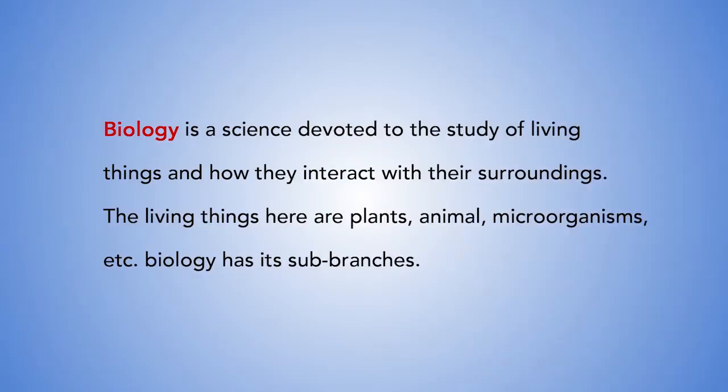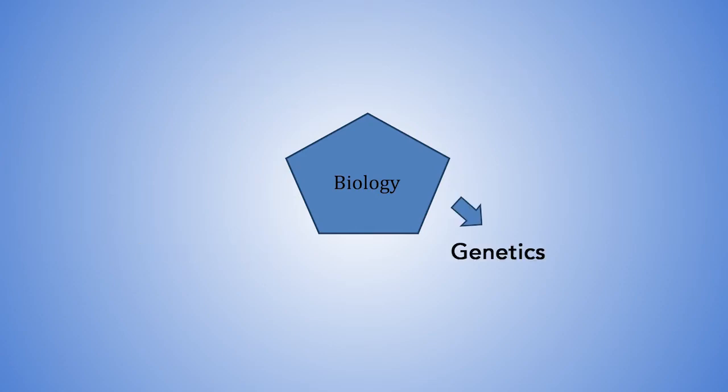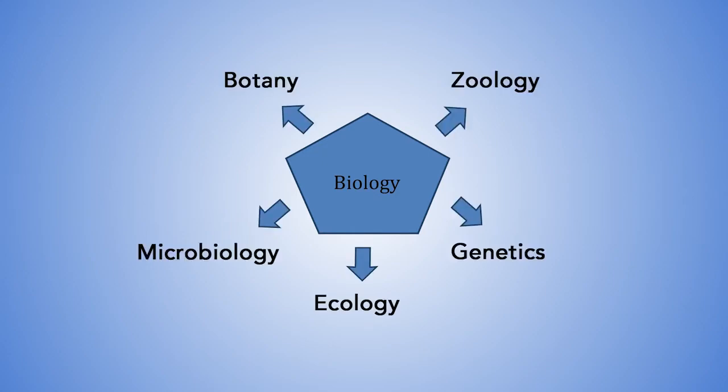Let us explain these branches of pure science briefly. We start with biology. Biology is a science devoted to the study of living things and how they interact with their surroundings. The living things here are plants, animals and microorganisms. Biology has sub-branches, and these are botany, zoology, microbiology, genetics, ecology, etc.